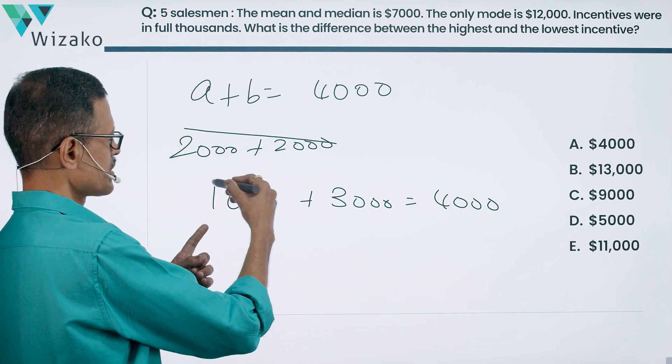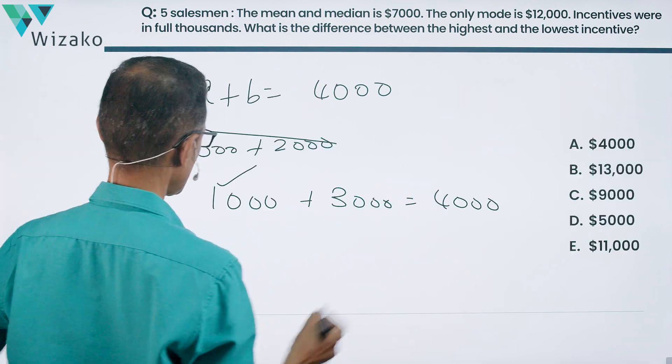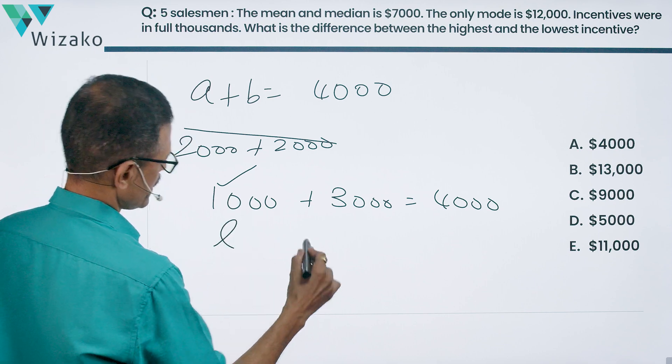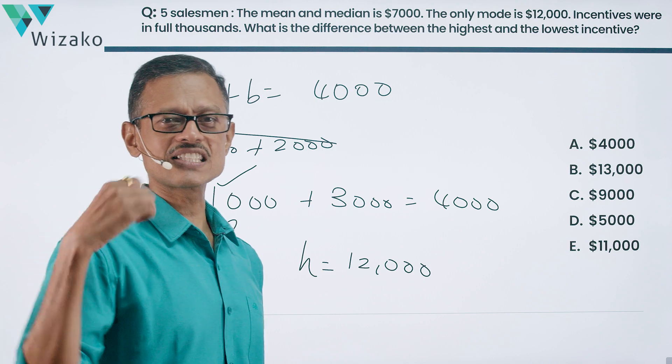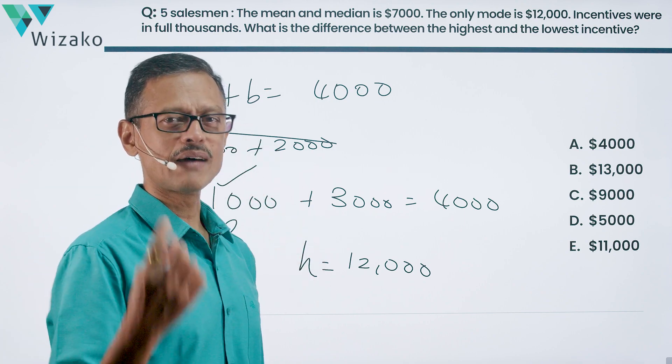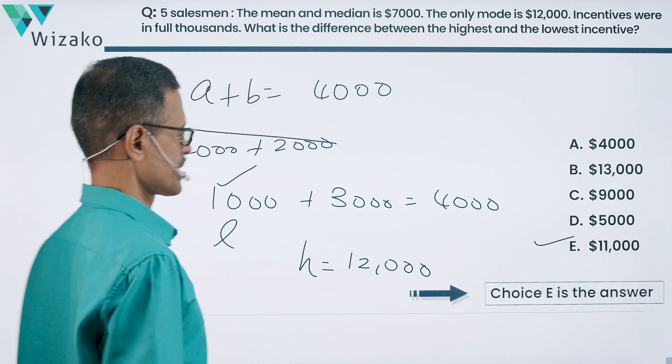So what is the lowest incentive received? 1,000. What is the highest incentive received? That's equal to 12,000. This is the lowest value. The highest value is equal to 12,000. So difference between the highest and the lowest incentive is 12,000 minus 1,000 which is equal to 11,000. Choice E is the correct answer to this question.